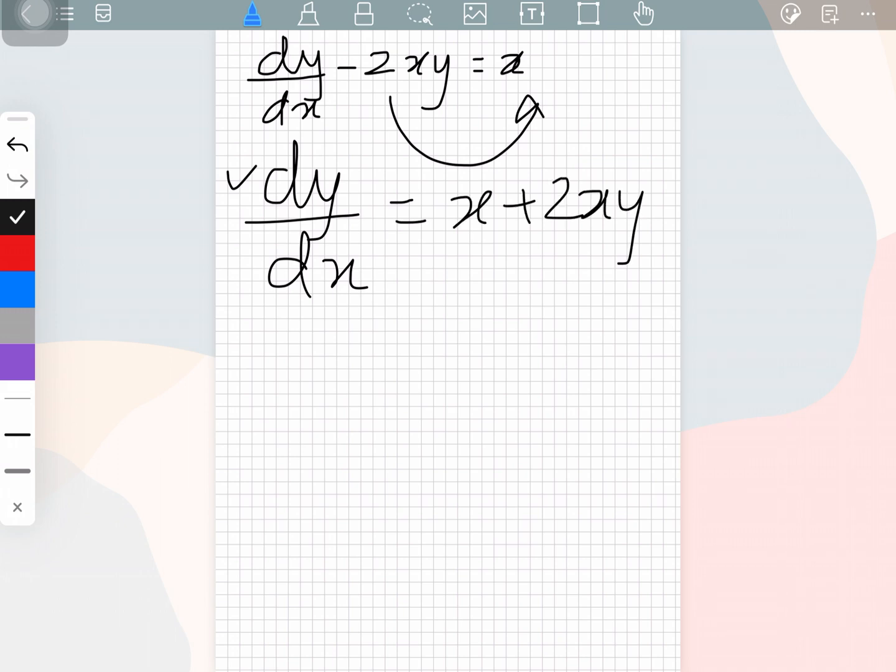After this what we can do is we can take x common from these two terms. So dy over dx is equal to, let's take x common, what we will get is 2y plus 1.